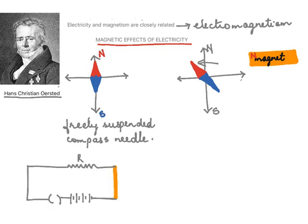Here's a circuit diagram. There is a resistance R connected to a key and a battery. In the beginning we keep the key open, so there is no current flowing in the circuit. When the compass is kept close to this circuit, it remains in the north-south direction. But if we close the circuit, current will begin to flow.